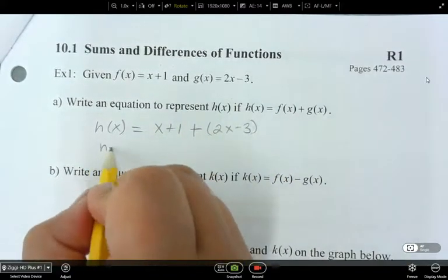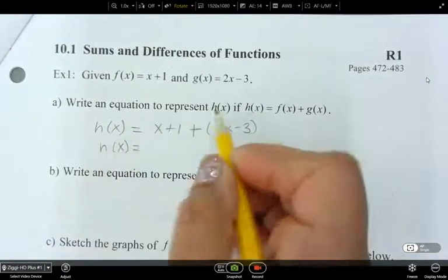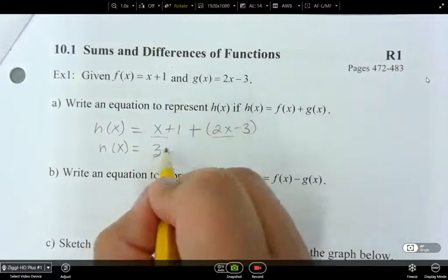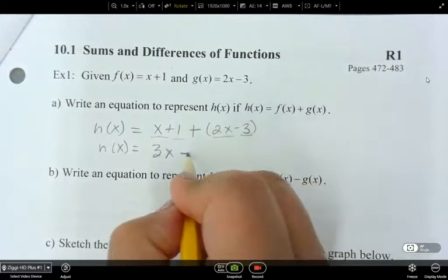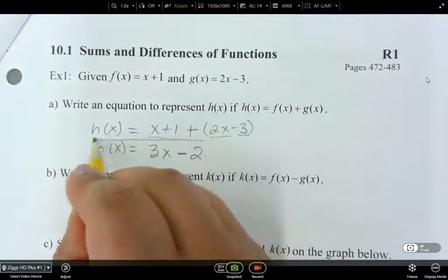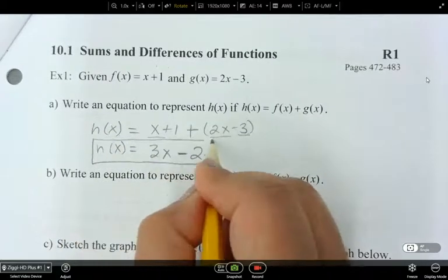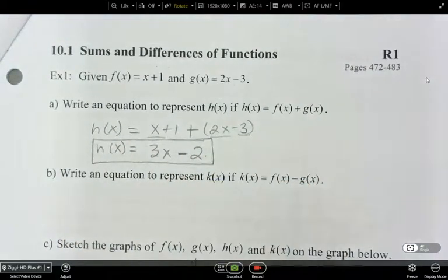So simplify, combine like terms. We've got our x's here, so that's 3x in total, and then our constant, which gives us negative 2. So this is h of x. That's the equation.